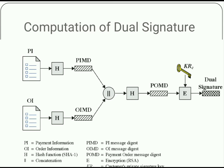Here is the figure for the dual signature. Starting from the left: payment information is hashed with SHA (Secure Hash Algorithm) to get PIMD (Payment Information Message Digest). Similarly, OI (order information) is hashed with SHA1 to get OIMD (Order Information Message Digest). PIMD and OIMD are then concatenated and hashed again with SHA to produce POMD (Payment Order Message Digest). This is then encrypted with KRC, the customer's private signature key. The final product is called the dual signature.